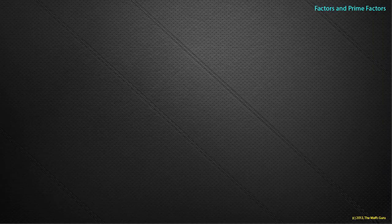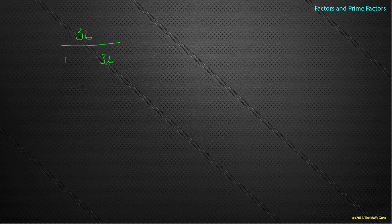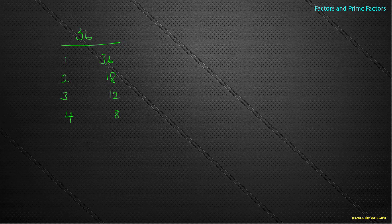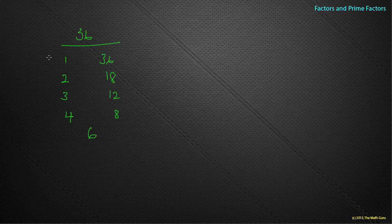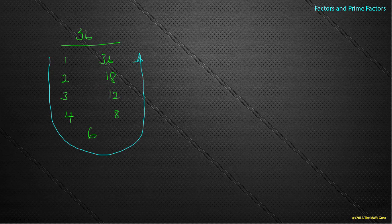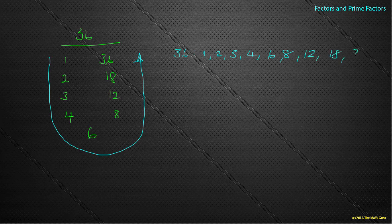Let's look at thirty-six. One and thirty-six. Two goes in eighteen times. Three goes in twelve times. Four goes in eight times. Five doesn't. Six goes in six times — so we write six in the middle. We have our completed horseshoe and the factors of thirty-six are one, two, three, four, six, eight, twelve, eighteen and thirty-six.